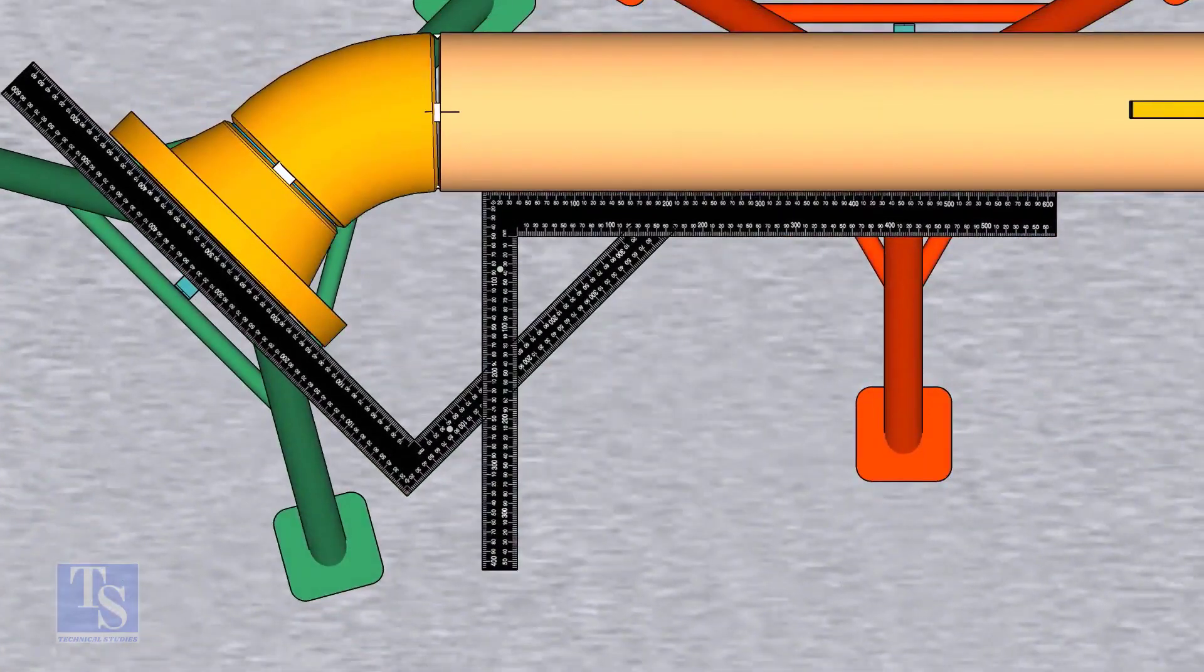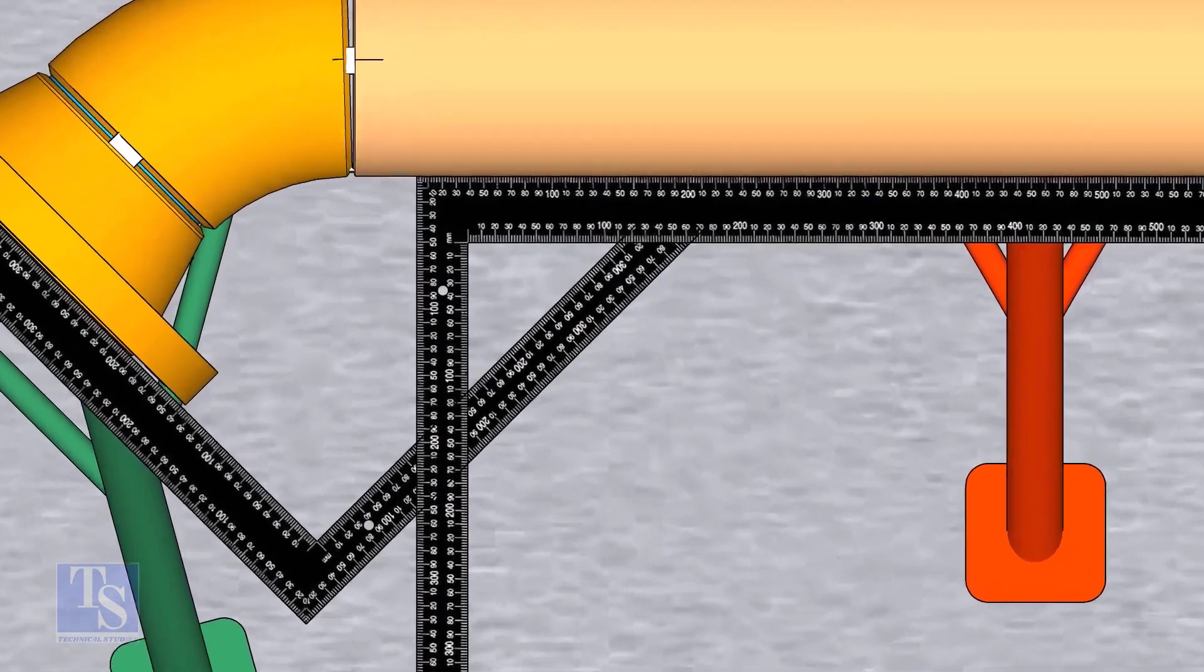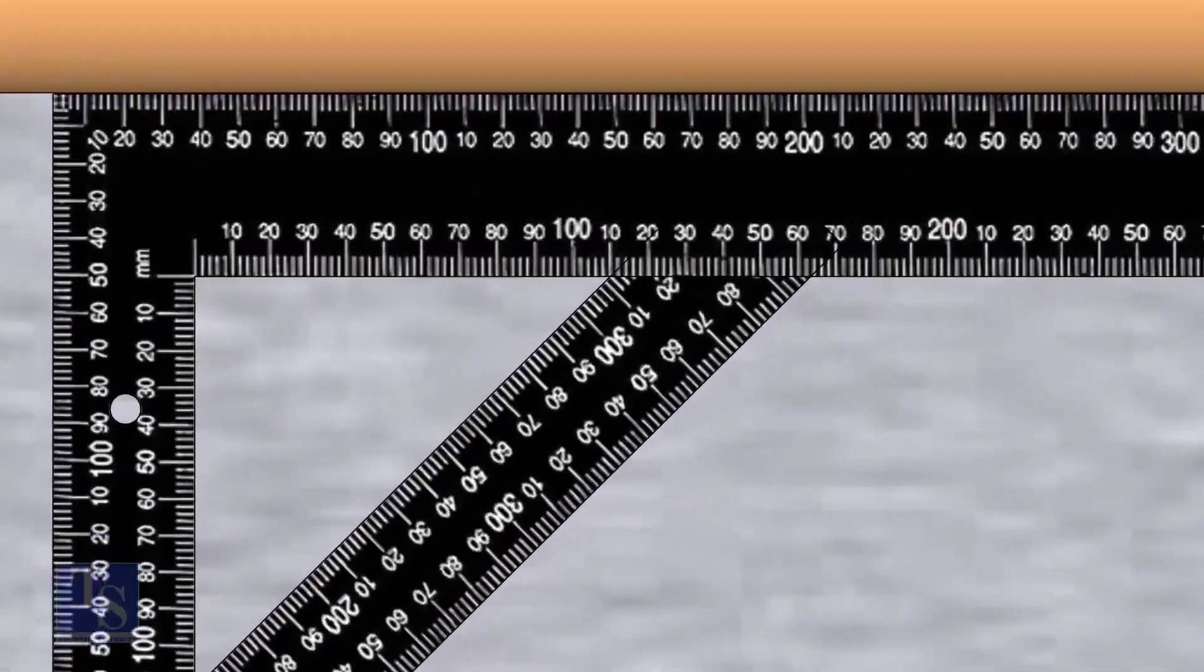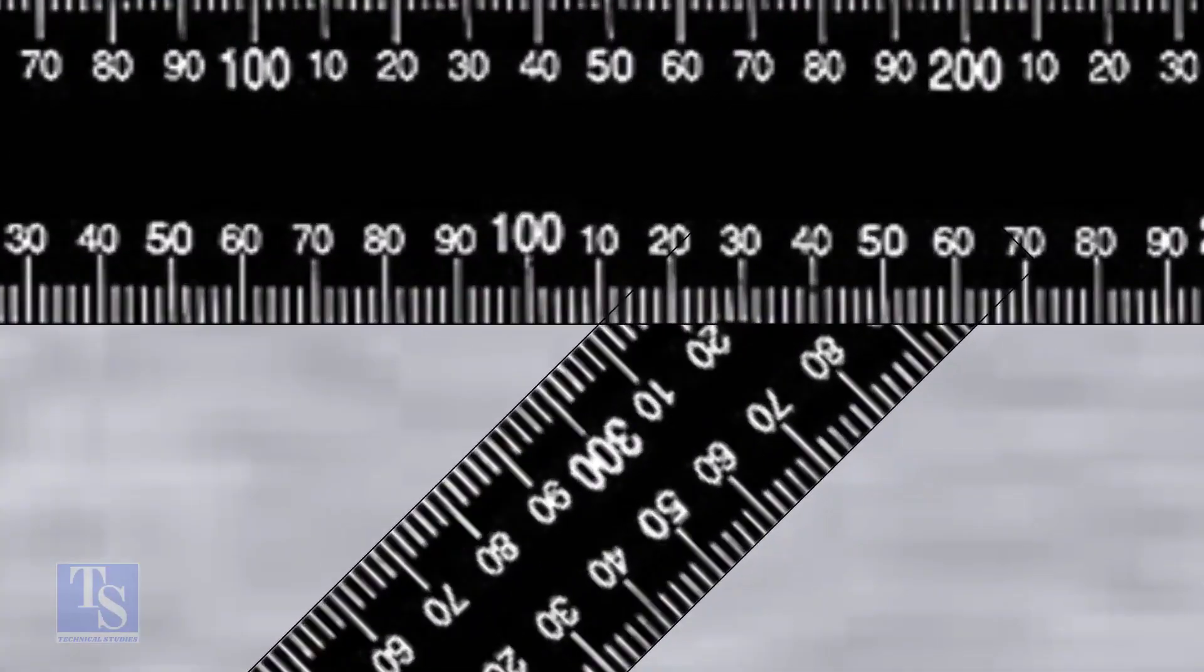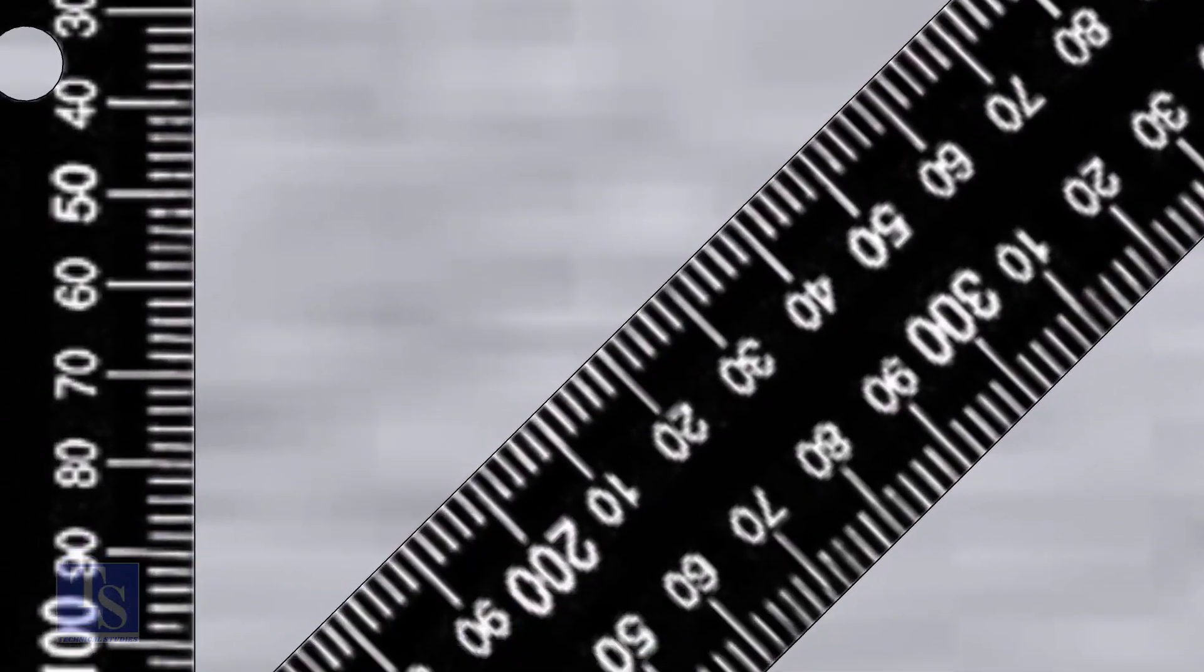Check the degree of the flange face to the pipe. Tack weld on both sides of the joint.